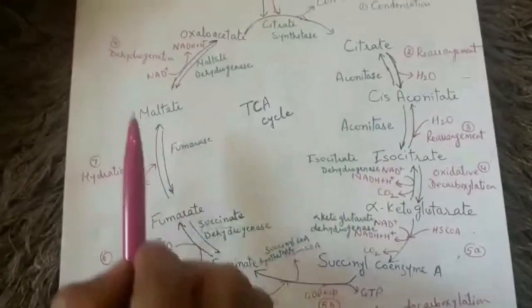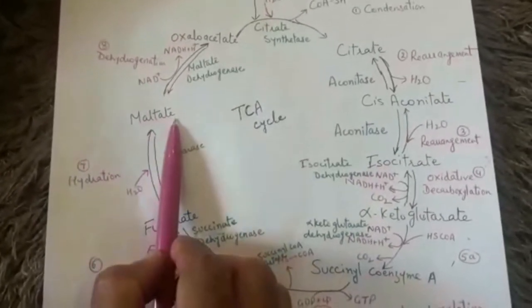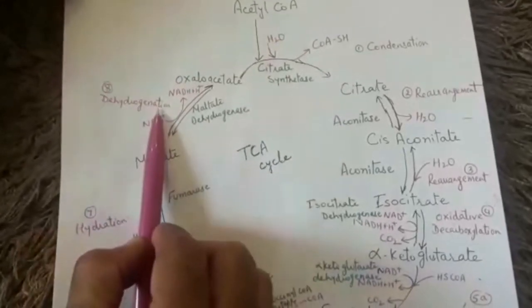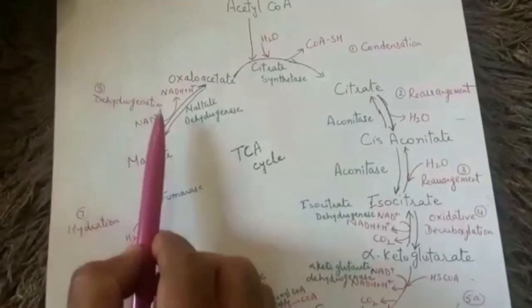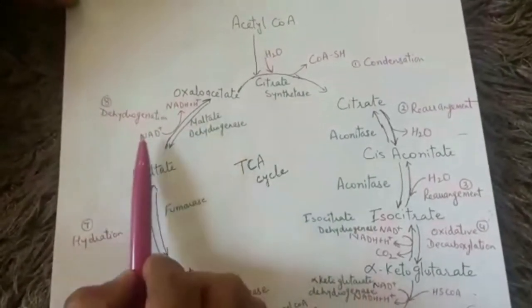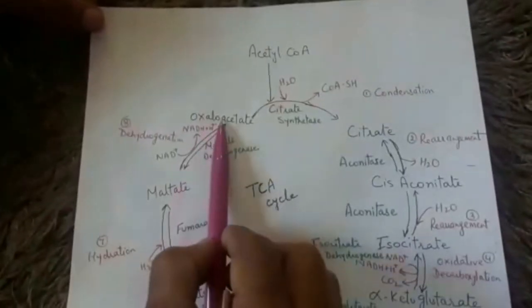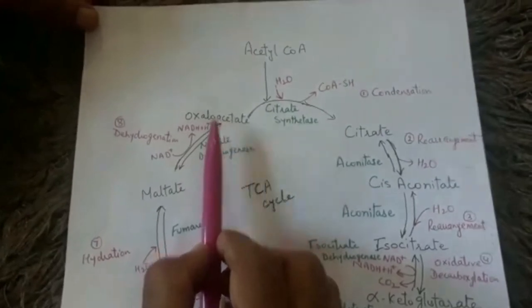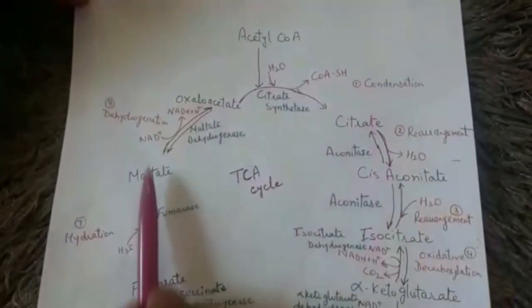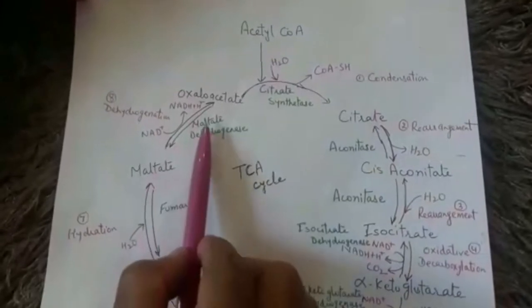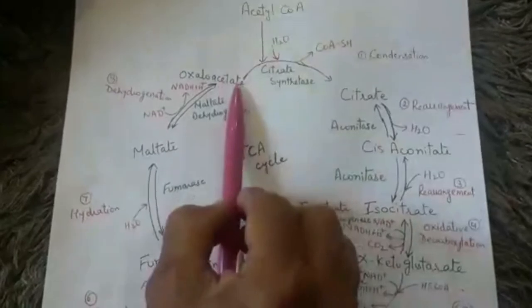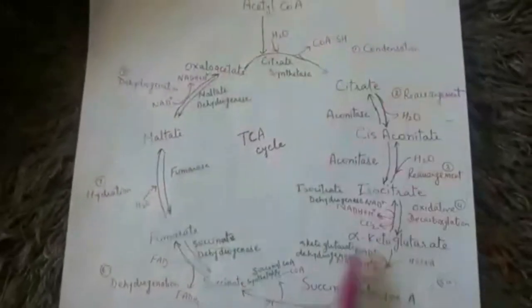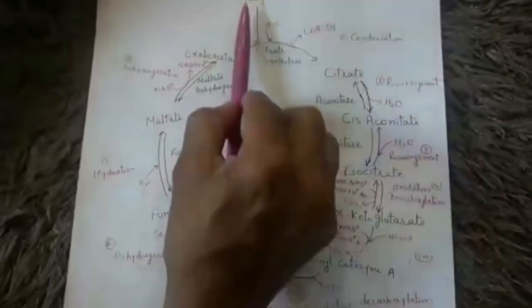The eighth step is dehydrogenation again, but here the coenzyme is NAD. A pair of hydrogen atoms is lost, picked up by NAD which is reduced to NADH, and malate changes into oxaloacetate. The enzyme is malate dehydrogenase. Oxaloacetate then repeats the same cycle by condensing again with acetyl coenzyme A.